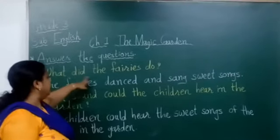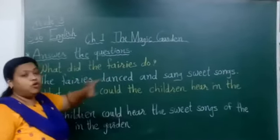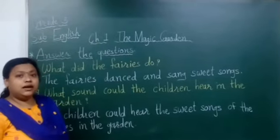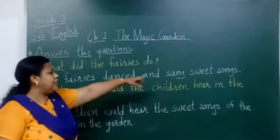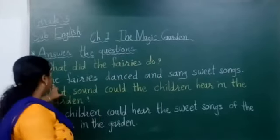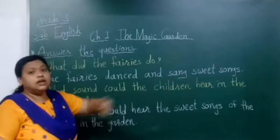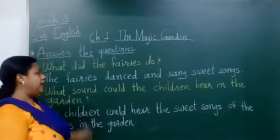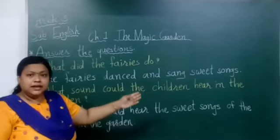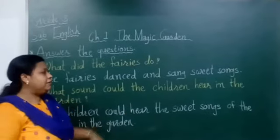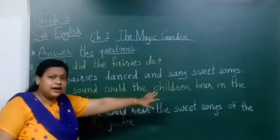Question number 8: What did the fairies do? Fairies to garden mein thay, woh kya kar rahi thay? The fairies danced and sang sweet songs. Woh garden mein dance kar rahi thay aur gaana ga rahi thay.